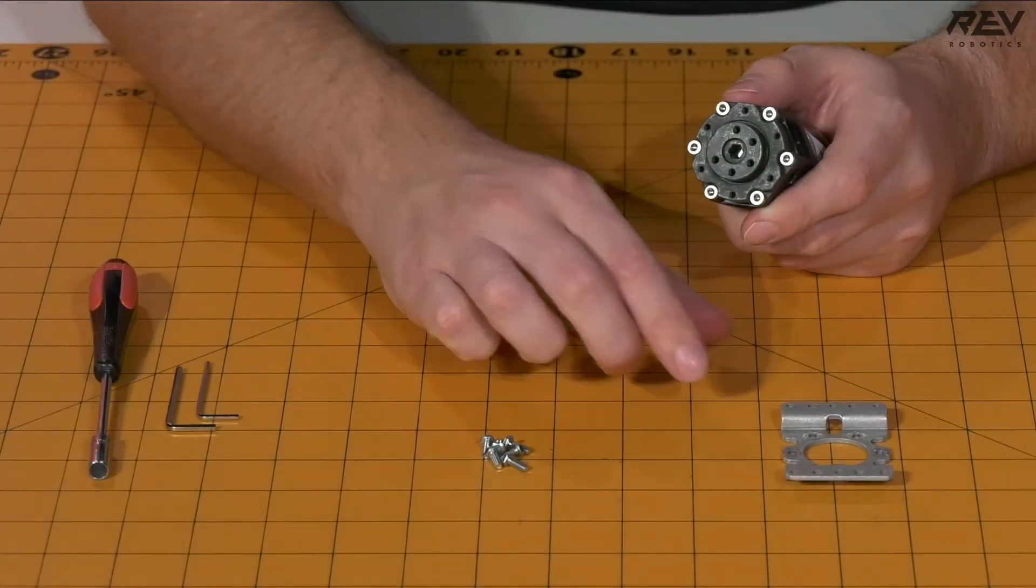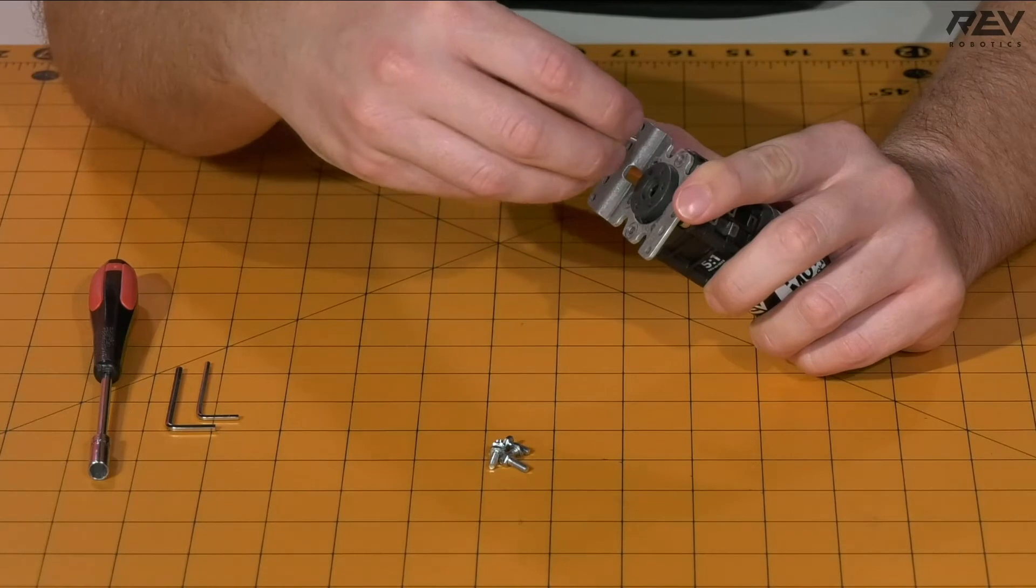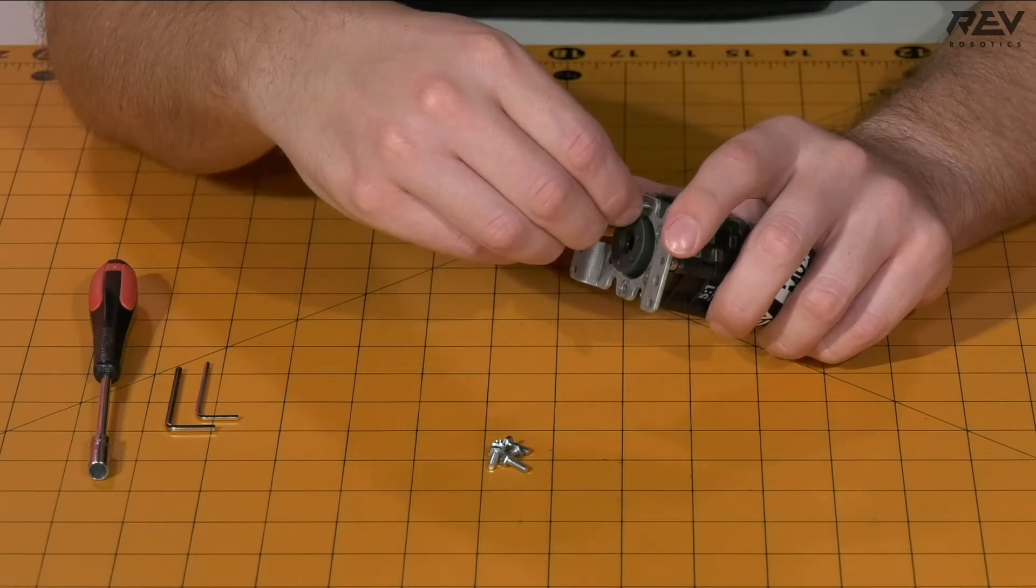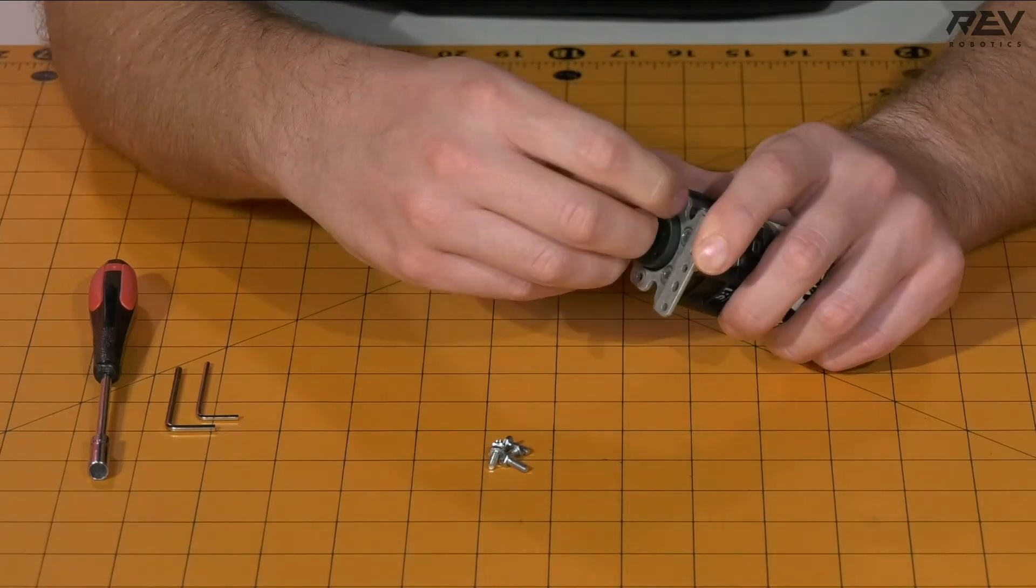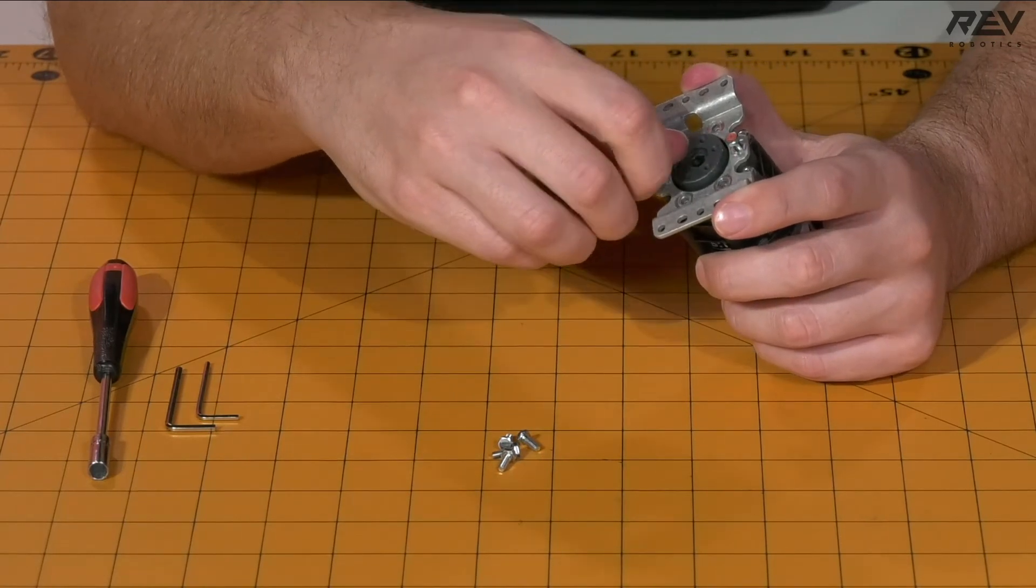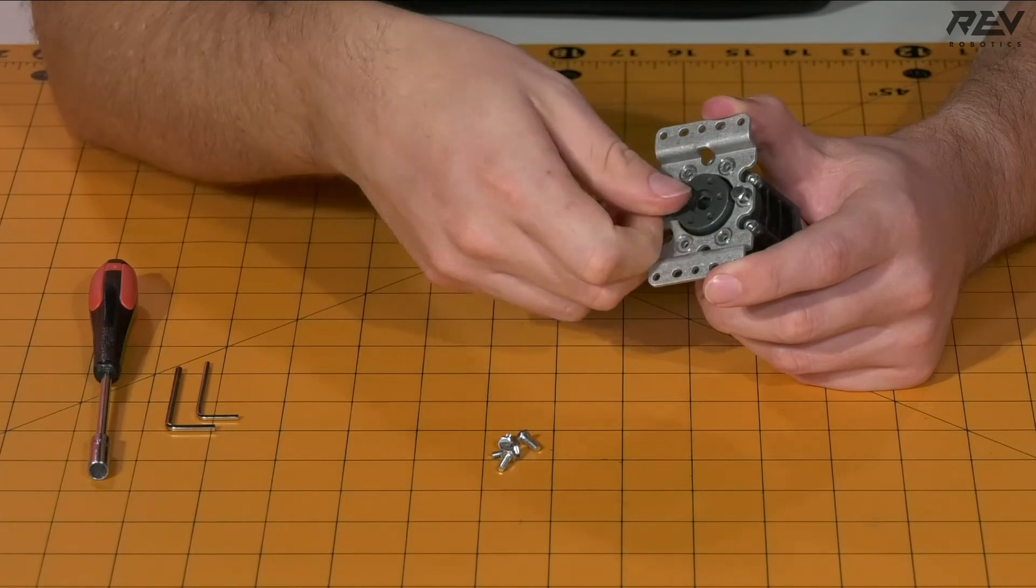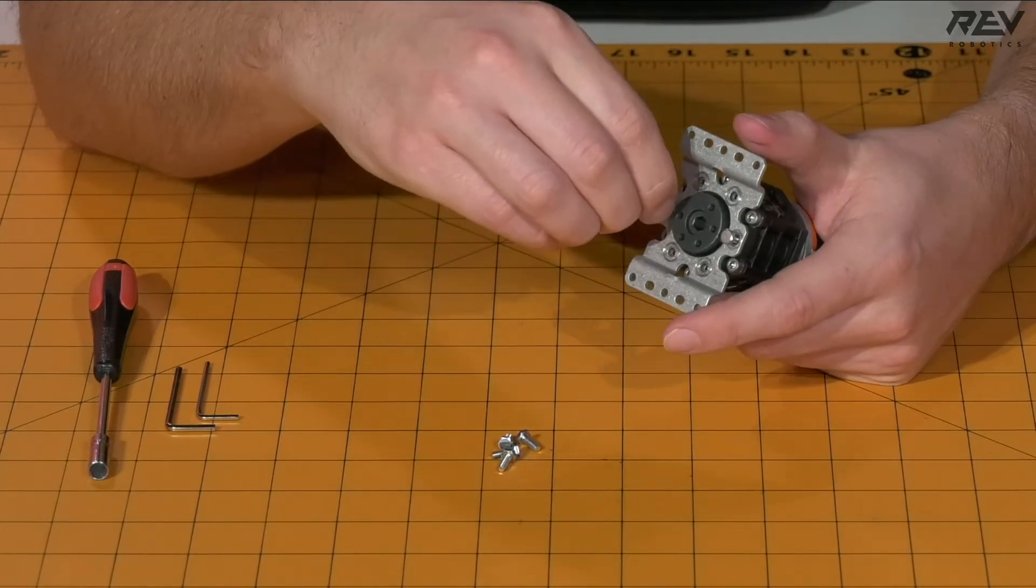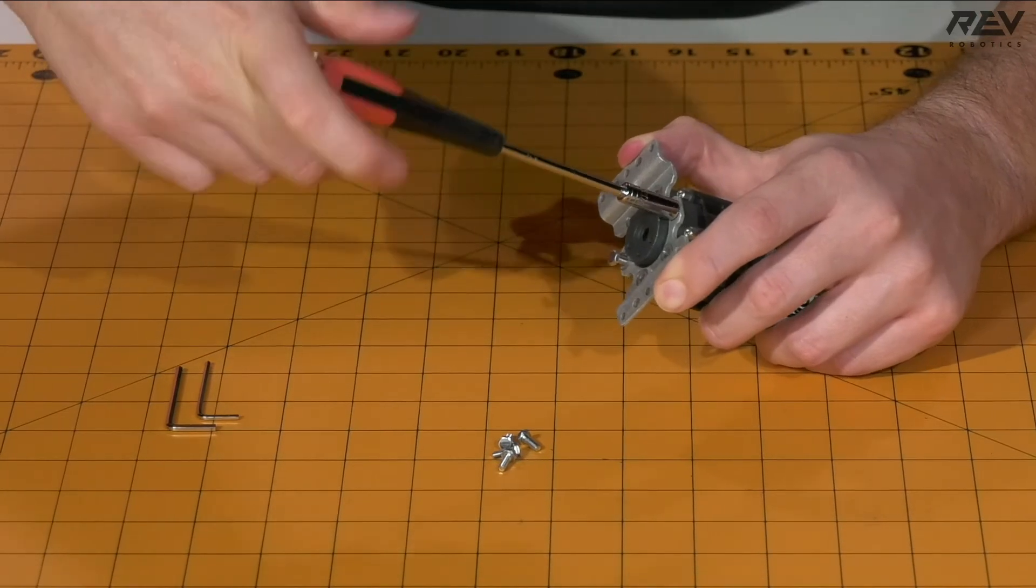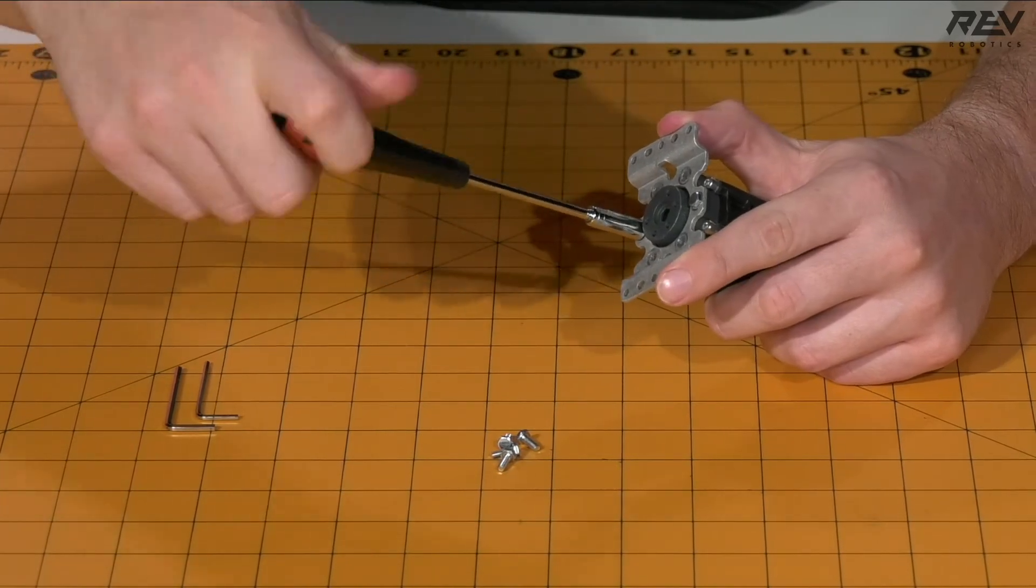Now that those are nice and snug, you want to take your outside mounting bracket and attach it to the ultraplanetary gearbox. So you're going to need to align the holes with the output itself. Usually getting these started with your finger is a good way to do this. Again, you're going to want to get these started in a crosswise pattern. Then go ahead and tighten them down with your 5.5mm nut driver.